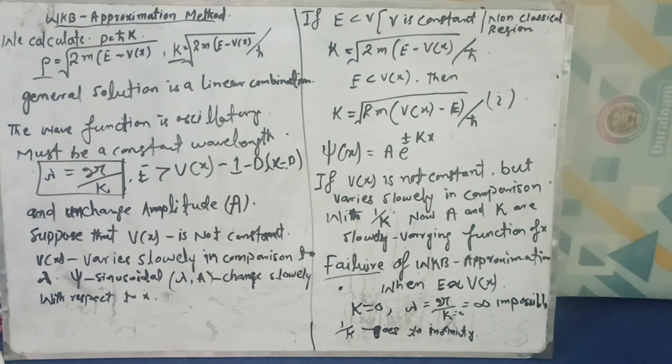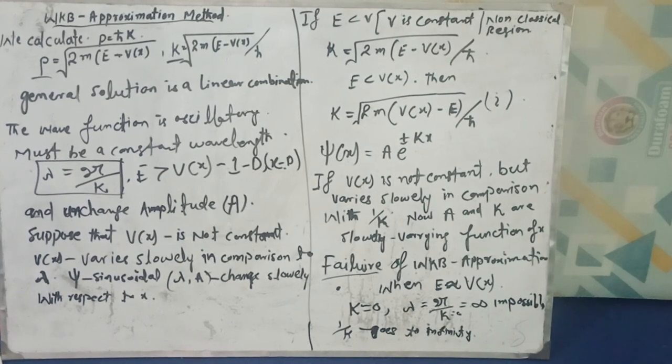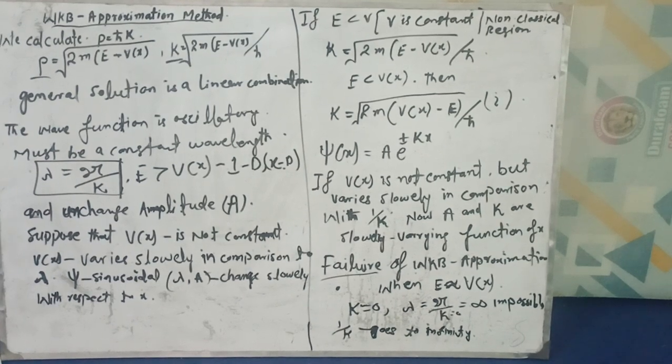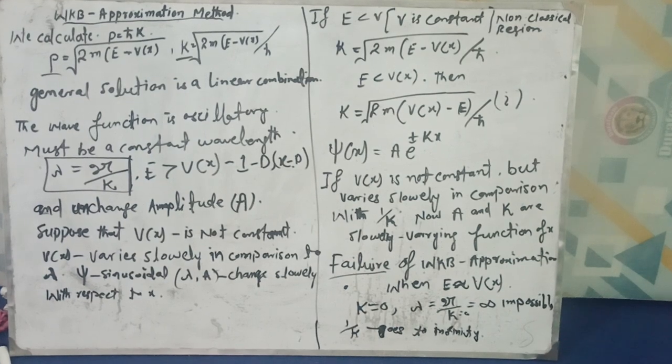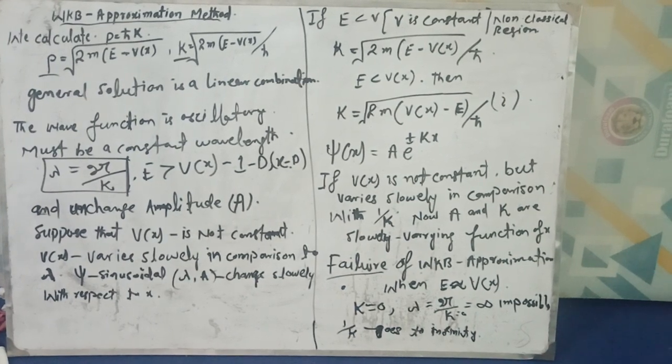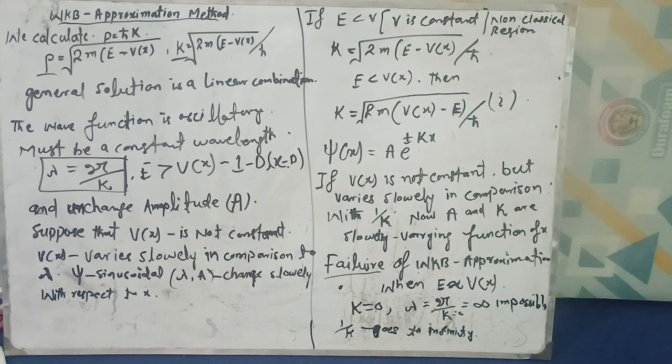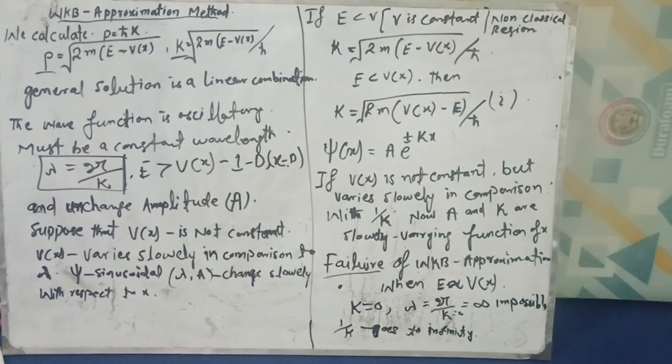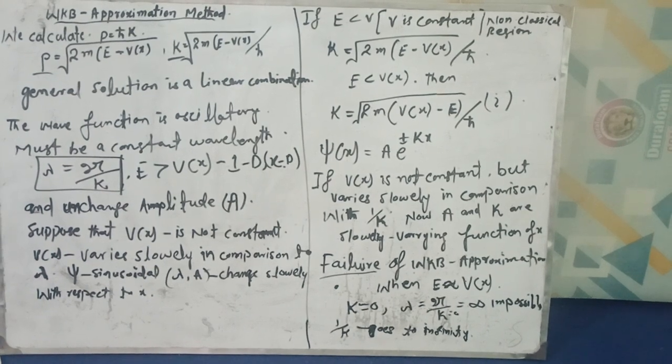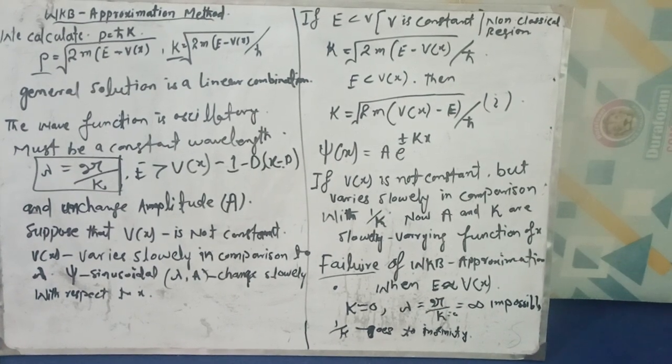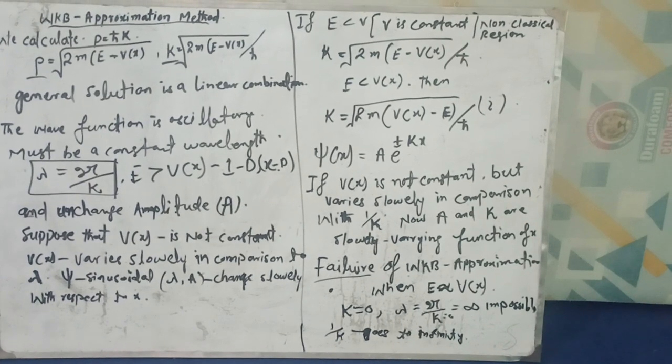Then the WKB approximation method will fail because the vector k goes to zero, so the wavelength will go to infinity, which is impossible. The wavelength cannot be infinite, and also 1/k goes to infinity, which is impossible. So this is the failure point of WKB approximation. In the next lecture we will discuss the classical region and calculate the wave function for the classical region, and also solve the time-independent Schrödinger equation.